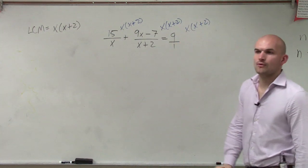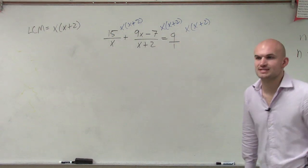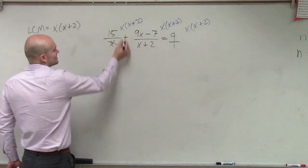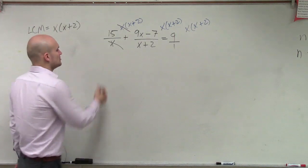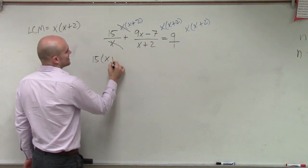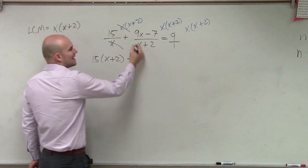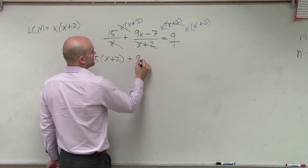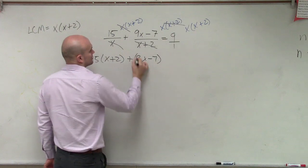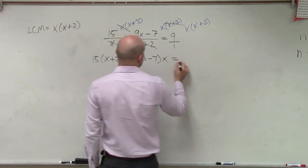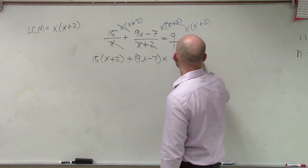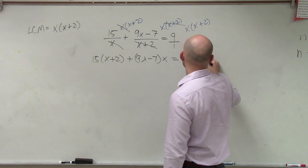OK, so now what's helpful when multiplying by our LCM is what we'll notice is that here my x's divide to 1, so I'm just left with 15 times x plus 2. Over here, my x plus 2's divide to 1, so I'm just left with 9x minus 7 times x. And then over here, nothing divides the 1, so I'm just left with 9 times x times x plus 2.